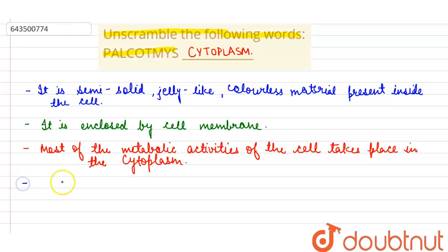Cytoplasm consists of various salts, water, and proteins. It is made up of salts, water, and proteins.